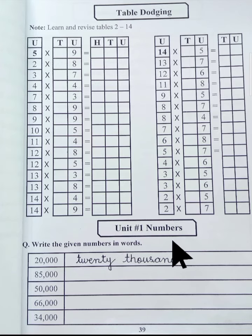I read the question. Write the given numbers in words. In previous class you have learnt 5 digit numbers. Look at the first number. It has 5 digits.